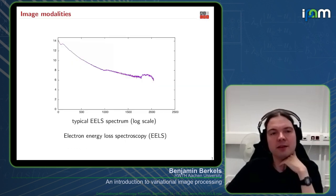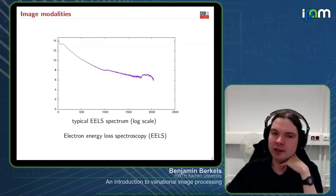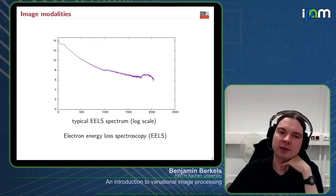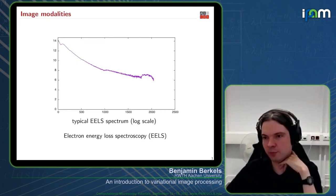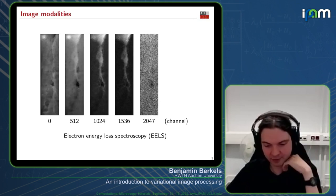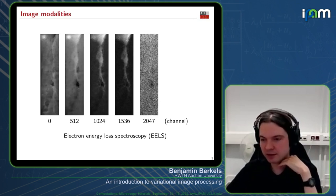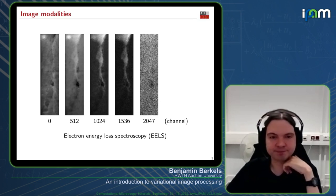Then there are so-called hyperspectral images. This looks like a signal, but here we have such a signal at every pixel. It is like a volumetric image, but with the third dimension being the channel or spectral dimension.